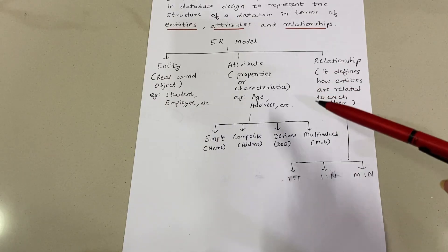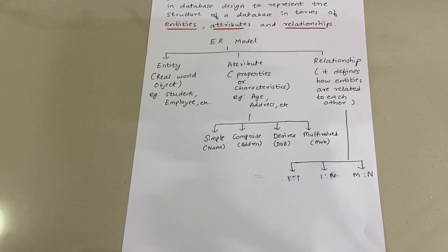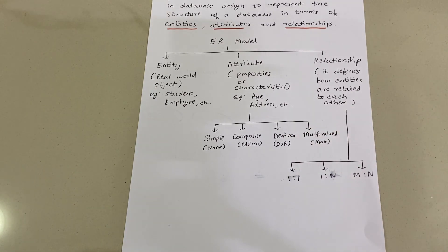There are four types of attributes. A simple attribute is straightforward, like the name of an employee. A composite attribute is made up of other attributes — for example, address can be composed of postal code, street, and house number. A derived attribute is derived from another attribute — for example, age can be derived from date of birth. A multi-valued attribute can hold multiple values, such as a person having multiple mobile numbers.